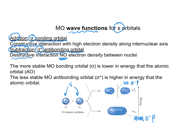The other point is the energetics. The more stable MO is the bonding orbital. Notice it is lower in energy than the original atomic orbitals. The less stable MO, the antibonding orbital, is higher in energy than the atomic orbital. This is the picture.